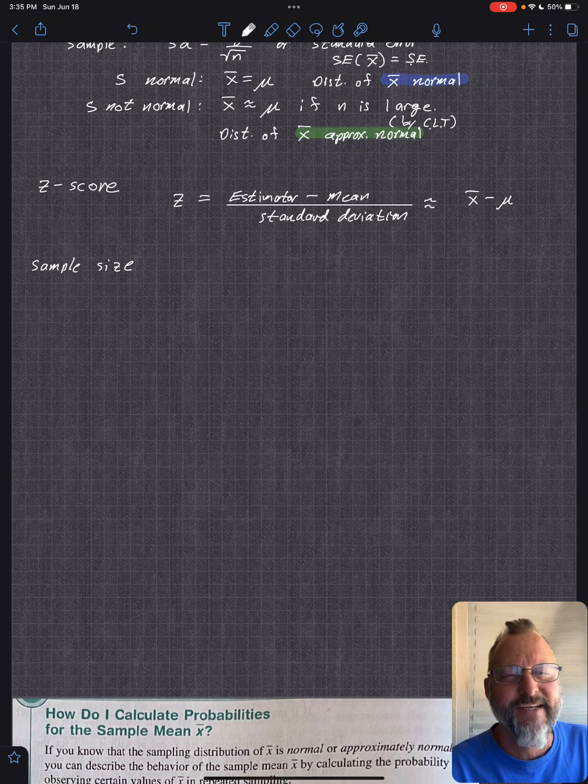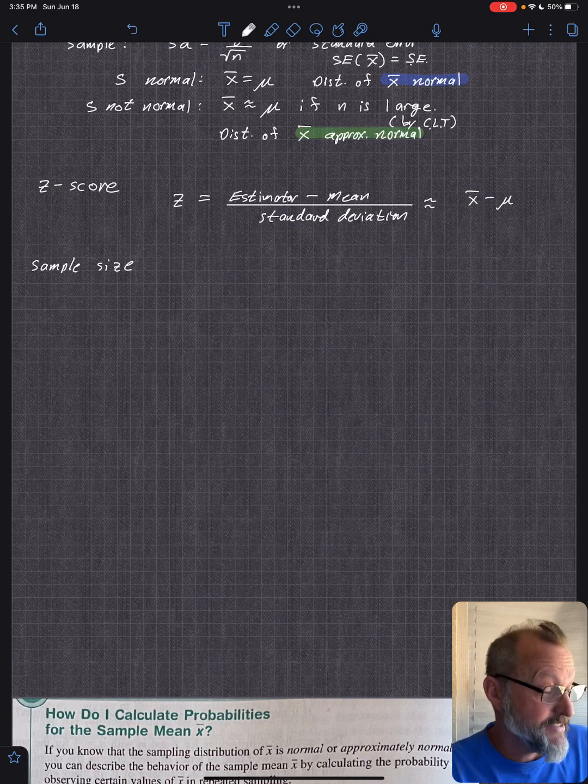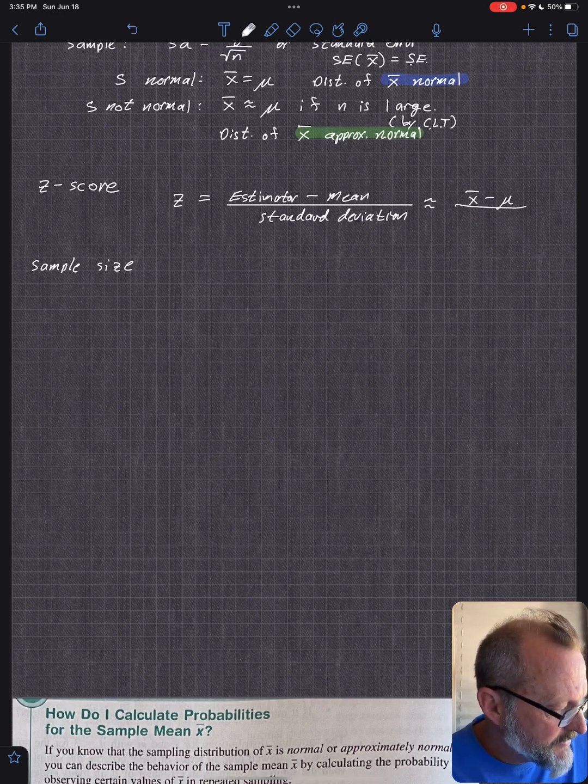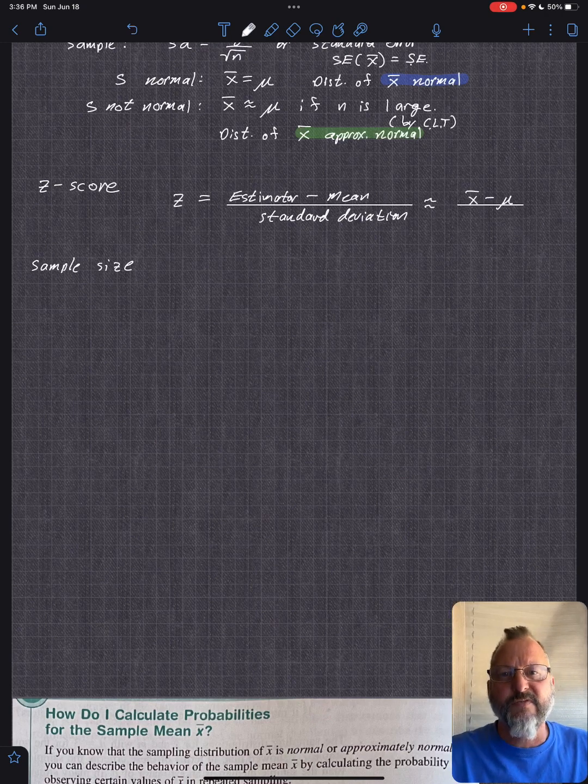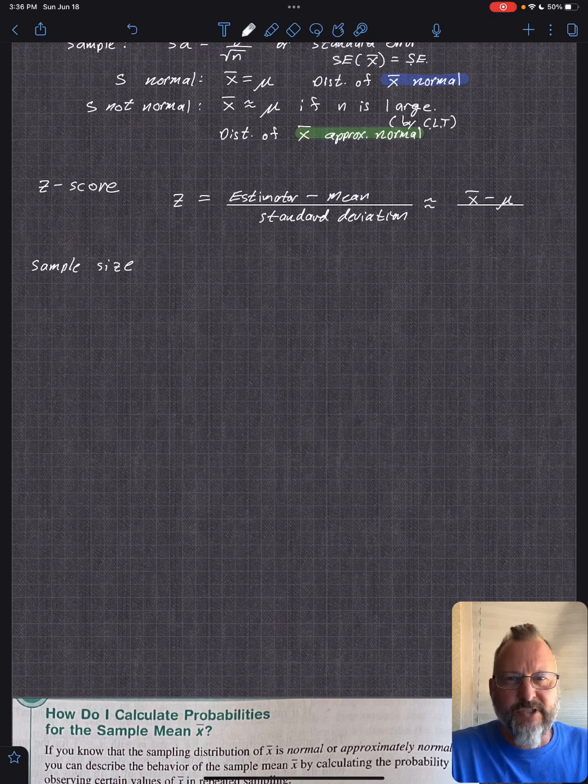This is the weird thing. We know mu. If we know mu, why are we sampling? Anyway, it's statistics. What can I say? It's getting you started. It's like doing physics when you assume a frictionless surface. First, you talk about that, and then you move on to assumptions you can make from that.